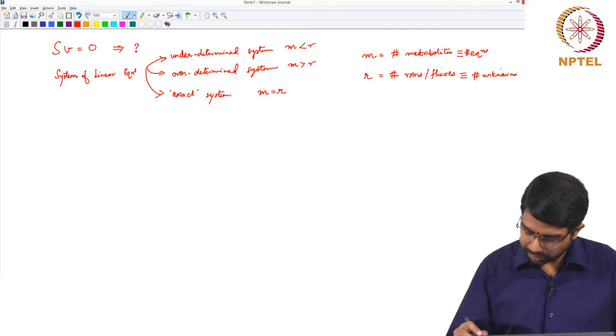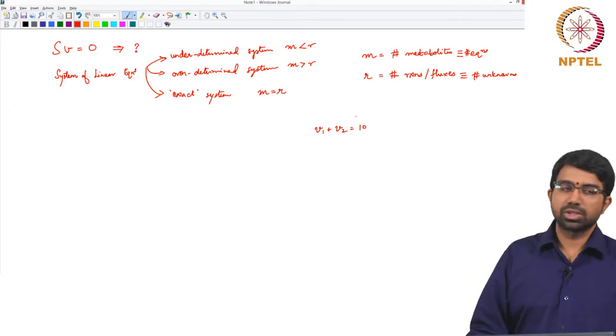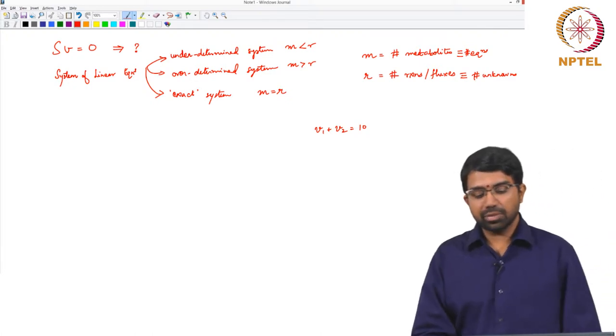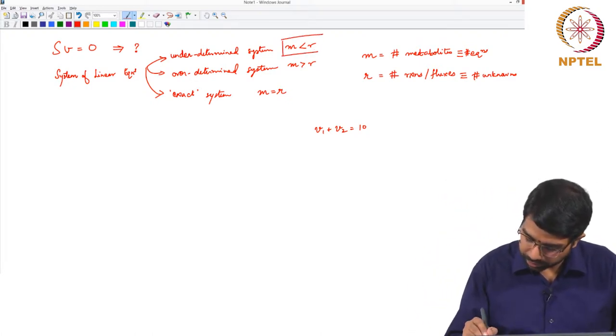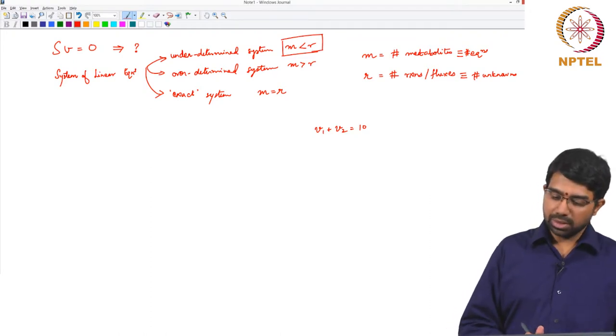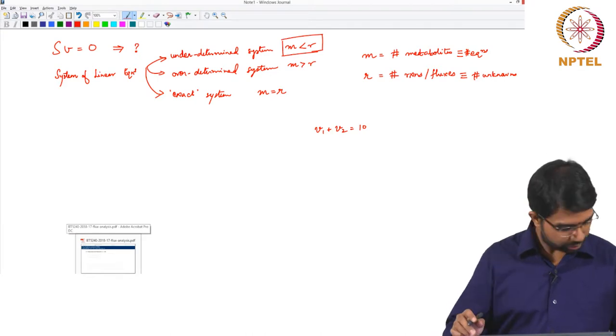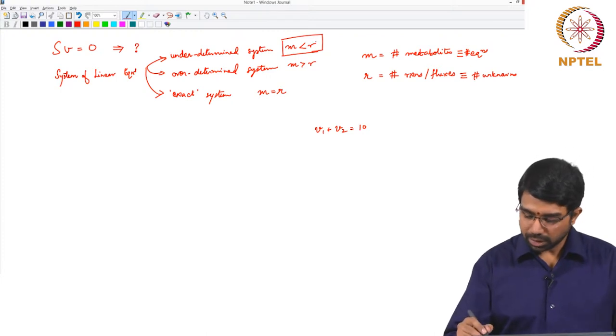If I just gave you an equation, V1 plus V2 equals 10 and ask you to solve it, how many solutions would you have? Obviously infinitely many solutions, which is the same thing we can expect for any underdetermined system. Whenever you have more reactions than metabolites, you will have an underdetermined system or a fat matrix.